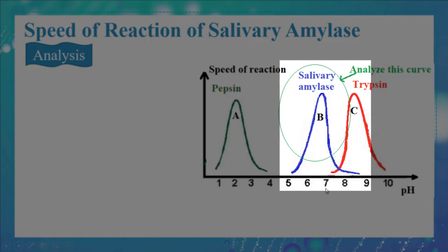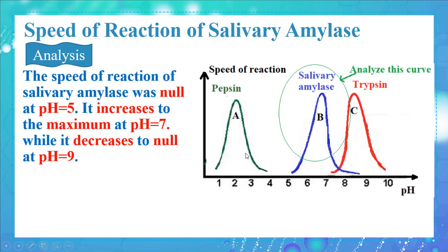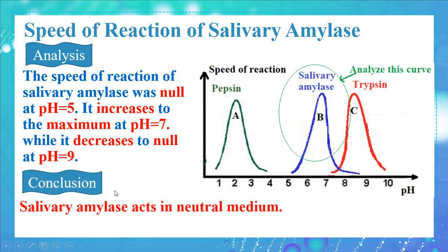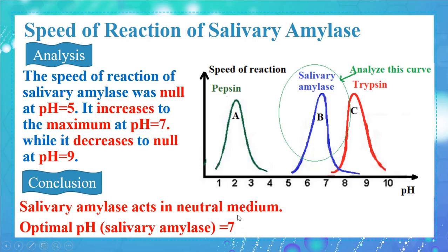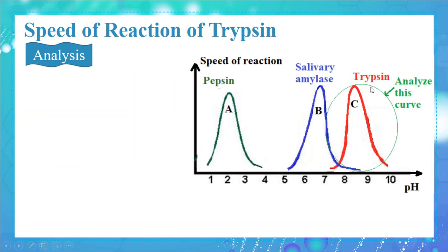The speed of reaction of salivary amylase was maximum at pH equal to 7, which corresponds to a neutral medium. The speed was null at pH equal to 5, increased to the maximum at pH equal to 7, and decreased to null at pH equal to 9. We conclude that salivary amylase acts in a neutral medium; the optimal pH for salivary amylase is 7.